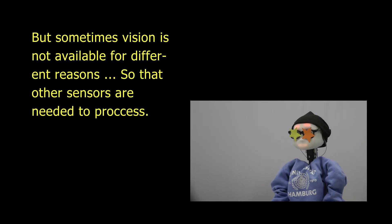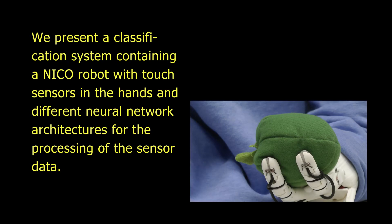But sometimes vision is not available for different reasons, so that other sensors are needed to process. We present a classification system containing a NECO robot with touch sensors in the hands and different neural network architectures for the processing of the sensor data.